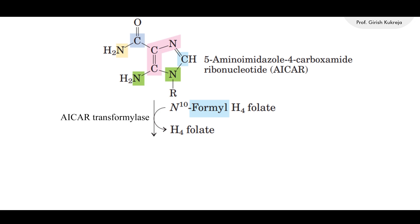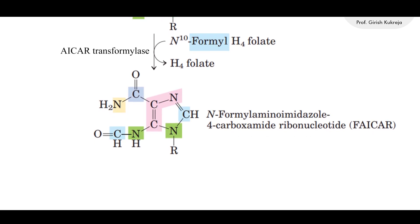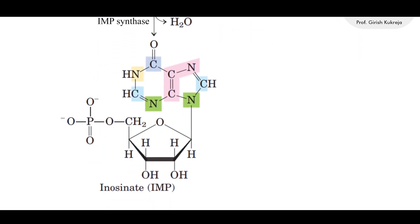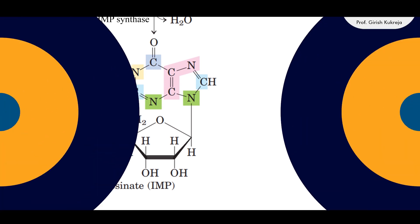The last carbon is now added by N10-formyl tetrahydrofolate to form N-formylaminoimidazole-4-carboxamide ribonucleotide, FAICAR. This is followed by the second ring closure by dehydration to form IMP. Thus, IMP, the first intermediate which has a complete purine ring, is formed.